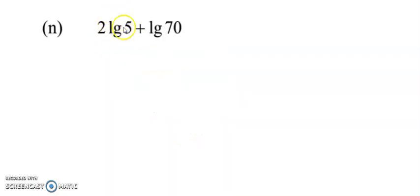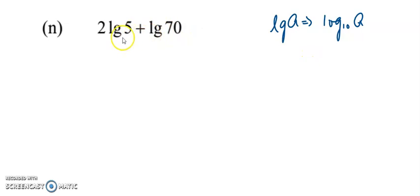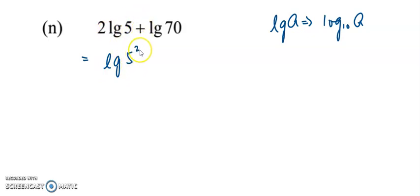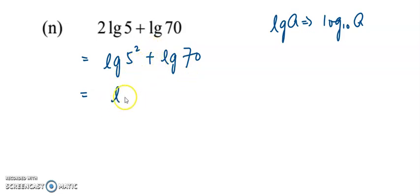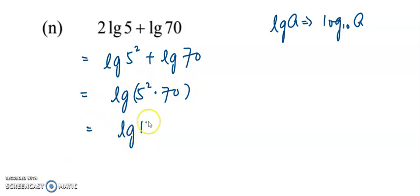For Example N, lg means log with base 10 — it is the common log. First, check the coefficient: bring the 2 up to become the power of 5, giving log 5 squared, plus lg 7. Both terms have base 10 and the operation is addition. Combine them by multiplying 5 squared by 7. Simplified, you have log 175.